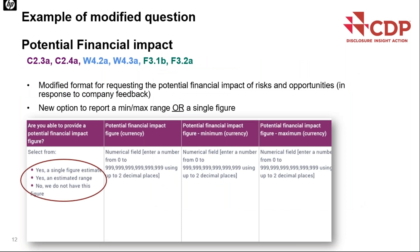Here's an example of a modified question — the financial impact question, which appears in both the climate change questionnaire and water and forests. Companies were feeding back that they weren't able to provide a single figure for their potential financial impact. So we've provided more flexibility: it's now possible to select 'yes, a single figure,' 'yes, an estimated range' — which pops up minimum and maximum columns — or 'no, we do not have this figure,' removing any need to enter further data.